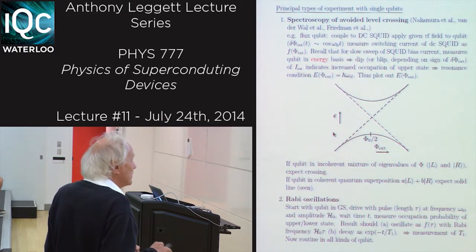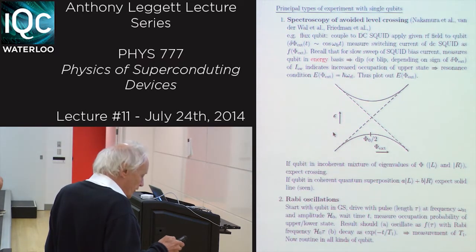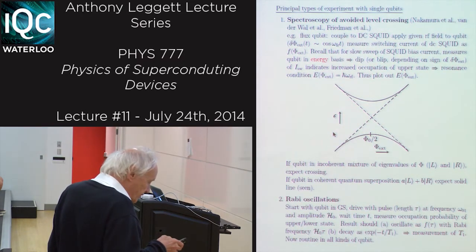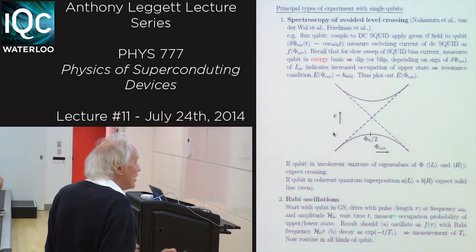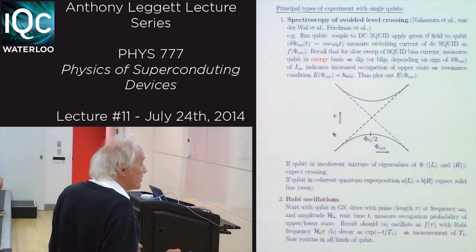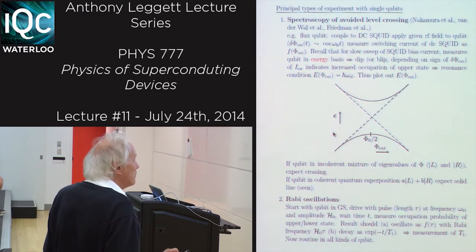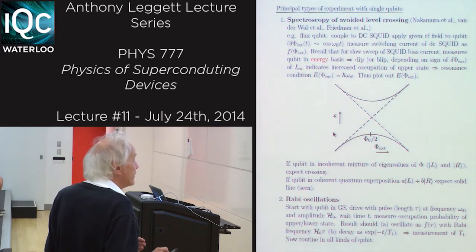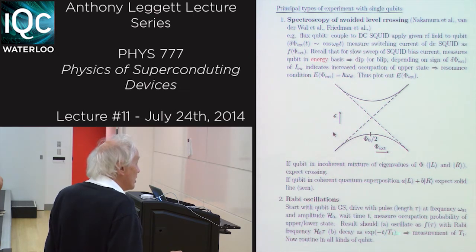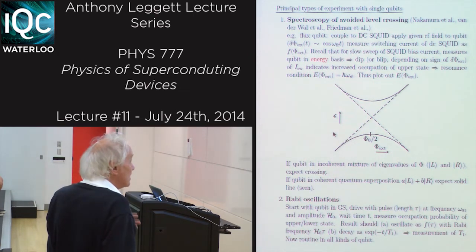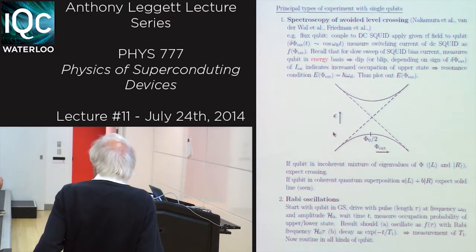The second kind of experiment is Rabi oscillations. You start with your qubit in the ground state, drive it with a pulse of length tau at the resonance frequency with amplitude H_0, wait a time t, and then measure the occupation probability of the upper and lower states. You expect the results to oscillate as a function of time with the Rabi frequency H_0 and also decay as exp(-t/T1). This is now pretty routine as a method for measuring T1.